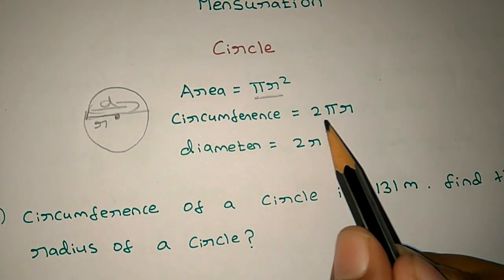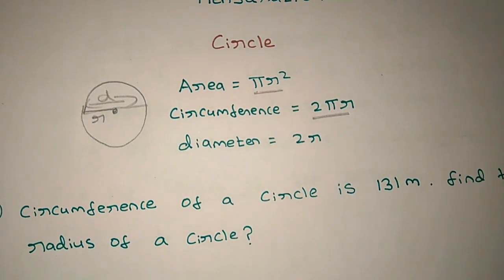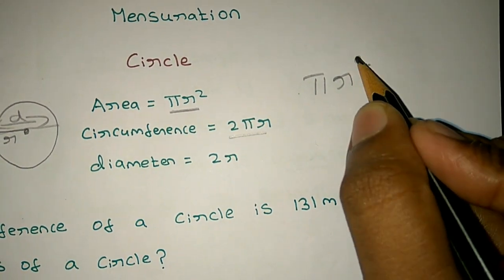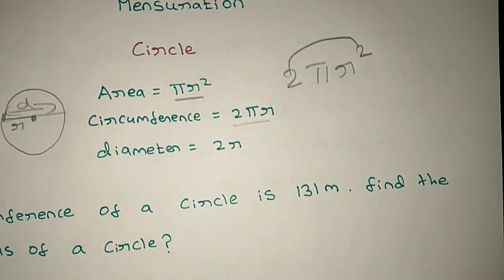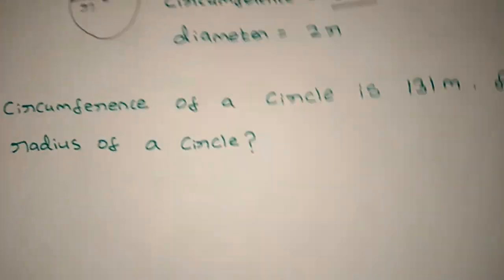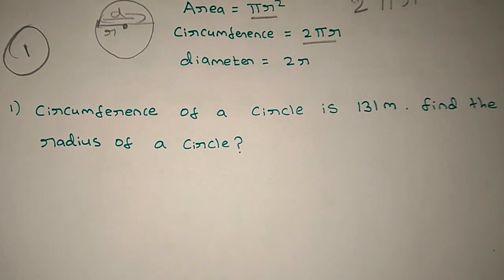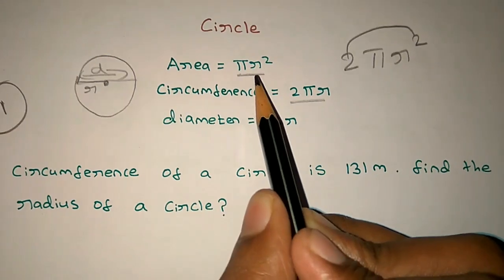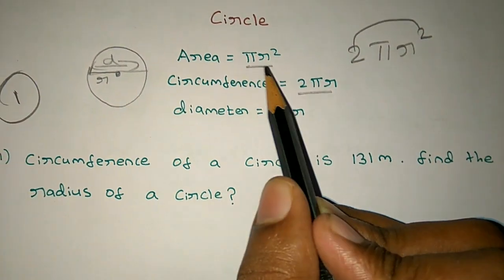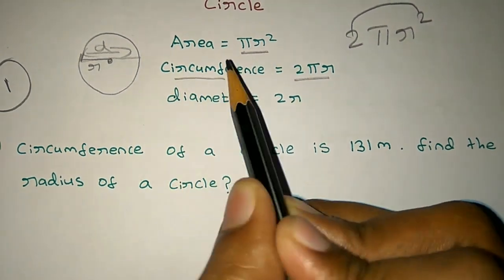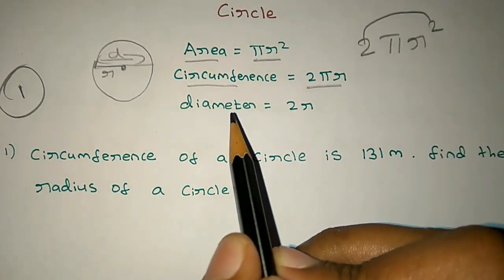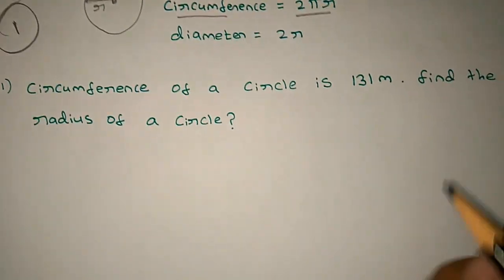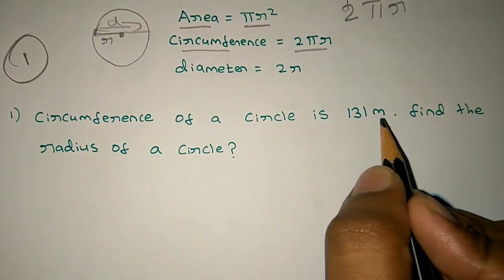The circumference of a circle is 2 pi R. If the circumference of a circle is 131 meters, find the radius of the circle. The circumference is 131 meters.